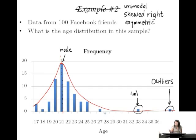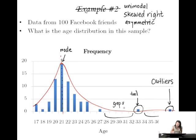Here we'll learn yet another term. We see there are these gaps — these are called gaps. And if we had a couple of people clustered in a group, we call that a cluster. A lot of these terms are pretty normal words you'd use in everyday life.